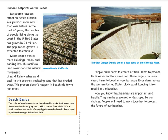Human Footprints on the Beach: Do people have an effect on beach erosion? Yes, perhaps more now than ever before. In the past 40 years, the number of people living along the coast in the United States has grown by 34 million. The population growth is expected to continue. More people means more buildings, roads, and parking lots. This artificial land cover stops the natural movement of sand. Rain washes sand back to the beaches, replacing sand that has eroded away. This process doesn't happen in beachside towns and cities.